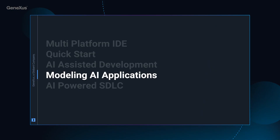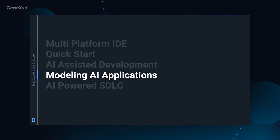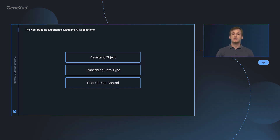Now that we have explored how artificial intelligence helps us with the how, we will shift our focus to understand how generative AI can assist us with the what — how generative AI through G-Nexus Next IDE will become part of the application generated. We will go over three key functionalities: beginning with the introduction of a new object known as the assistant object, a new data type known as embedding, and the ability to implement chat interfaces within the generated applications through a user control.